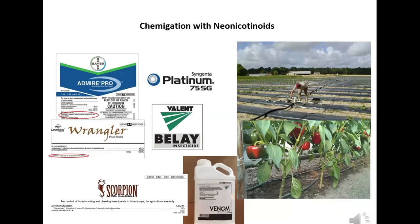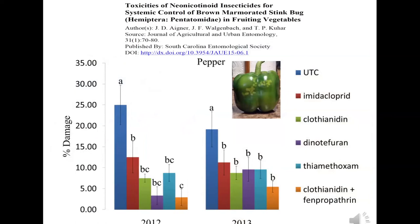We also looked at whether neonicotinoids applied through chemigation — since they're systemic and move through the plant into green tissue — would work against stink bugs. Stink bugs attack the fruit, and that's not where most neonicotinoid residue will be. But we tested this in peppers and tomatoes using a chemigation system in collaboration with Jim Walgenbach at NC State.